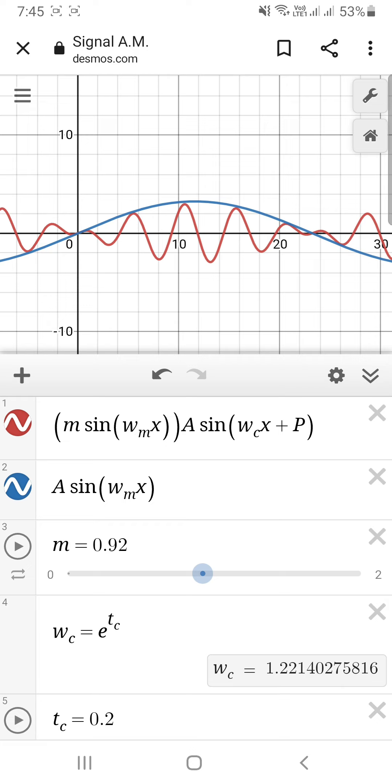Anyway, the red curve, it has this equation. This function is M sin(ω_m x) times A sin(ω_c x + p). You can ignore the plus p for now.